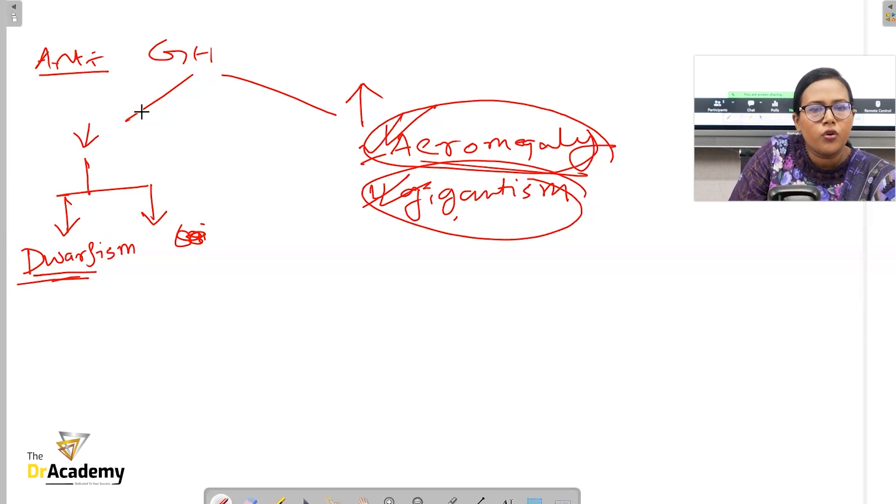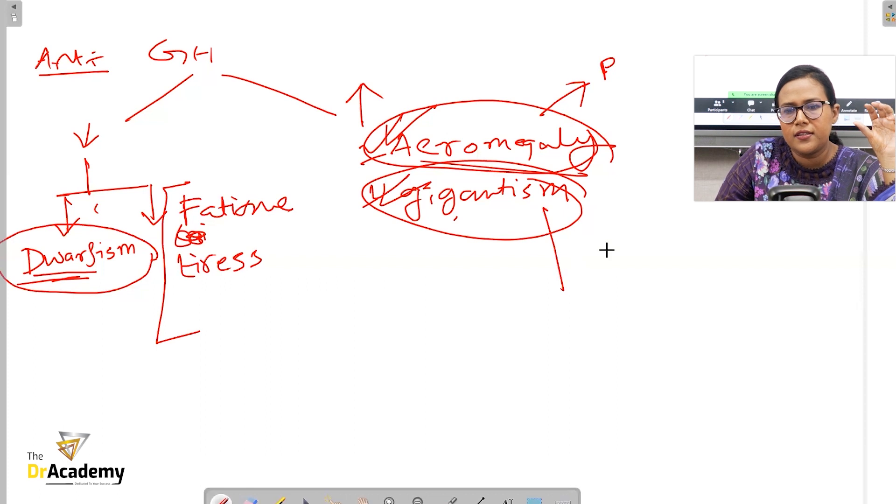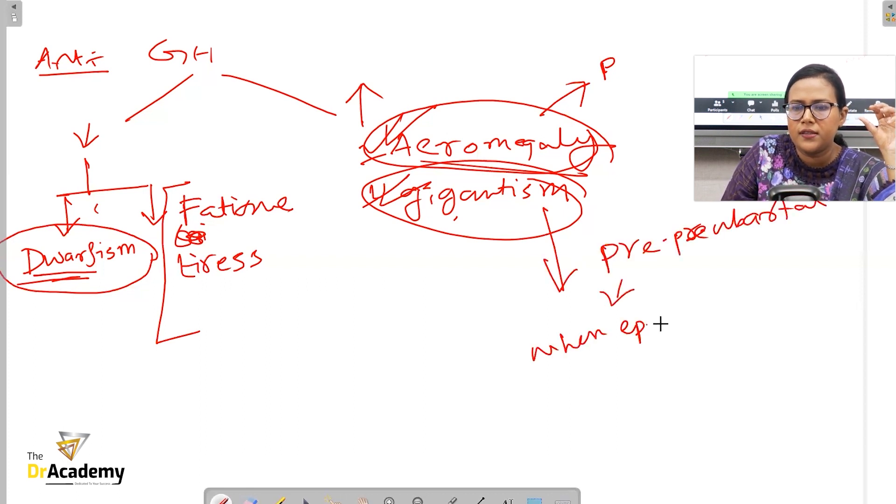If the epiphyseal plate fusion has not taken place, it can lead to gigantism. This occurs in the pre-pubertal stage - if there is excessive growth hormone secretion it can lead to gigantism. If growth hormone is deficient in the pre-pubertal stage, you might expect dwarfism. But in the post-pubertal stage, you might expect findings like fatigue and tiredness. It doesn't have any particular syndrome. Acromegaly can happen at any stage, so it doesn't have any association with epiphyseal plate fusion. Acromegaly is basically growth hormone excess state.